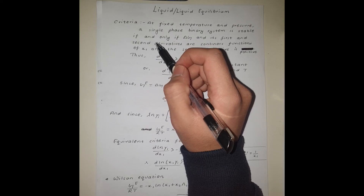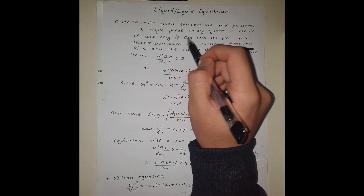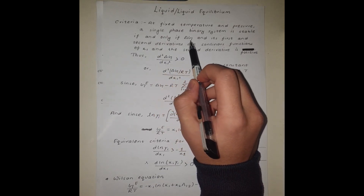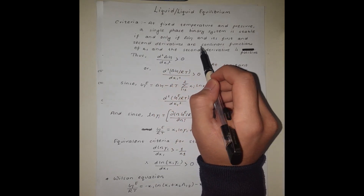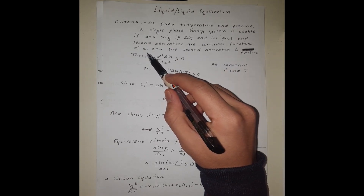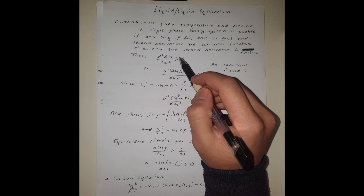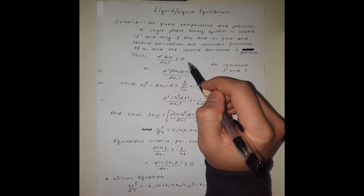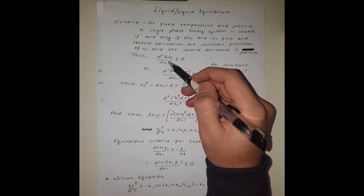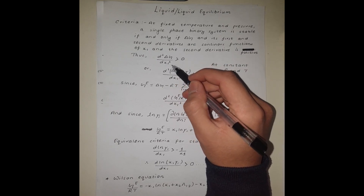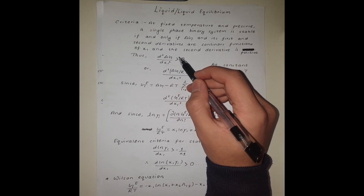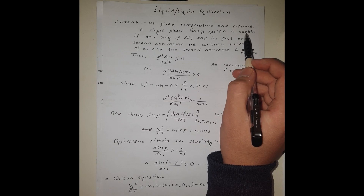The criteria states that at fixed temperature and pressure, a single phase binary system is stable if and only if delta G — the Gibbs free energy of mixing — and its first and second derivatives are continuous functions of x1 (the mole fraction of species one), and the second derivative is positive. So if the second derivative of Gibbs free energy of mixing with respect to x1 is greater than zero, we will have a stable single phase.